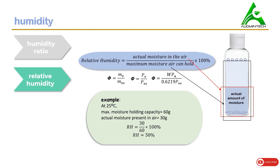Let's do an example to understand relative humidity better. At 25°C, a sample of air has a maximum moisture holding capacity of 60 grams — simplified values are used here for calculation. The maximum moisture holding capacity is 60 grams and the actual moisture present in the air is 30 grams. Using the formula, relative humidity comes out to be 50%.